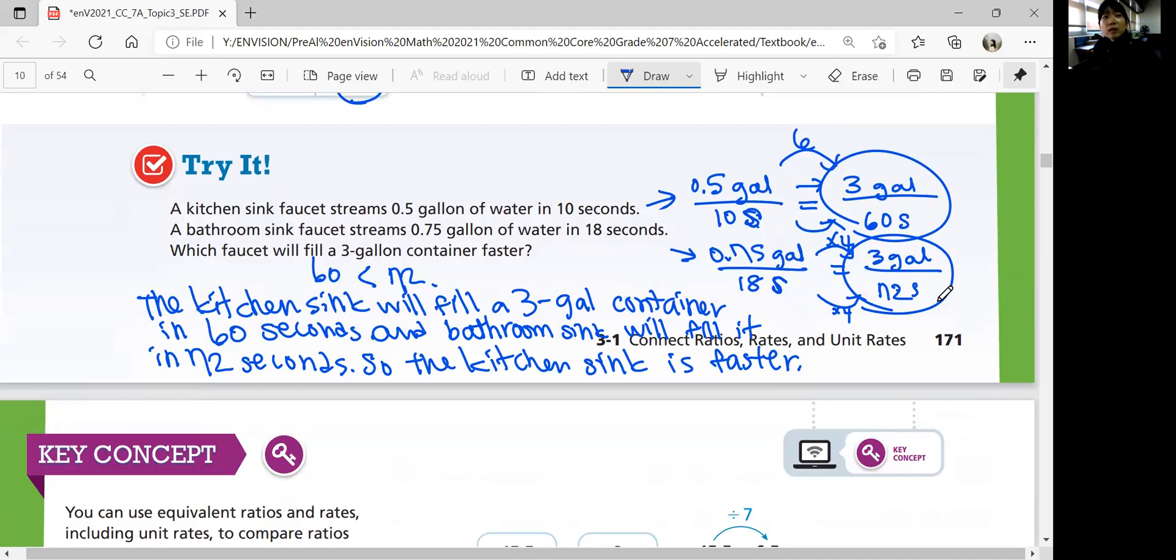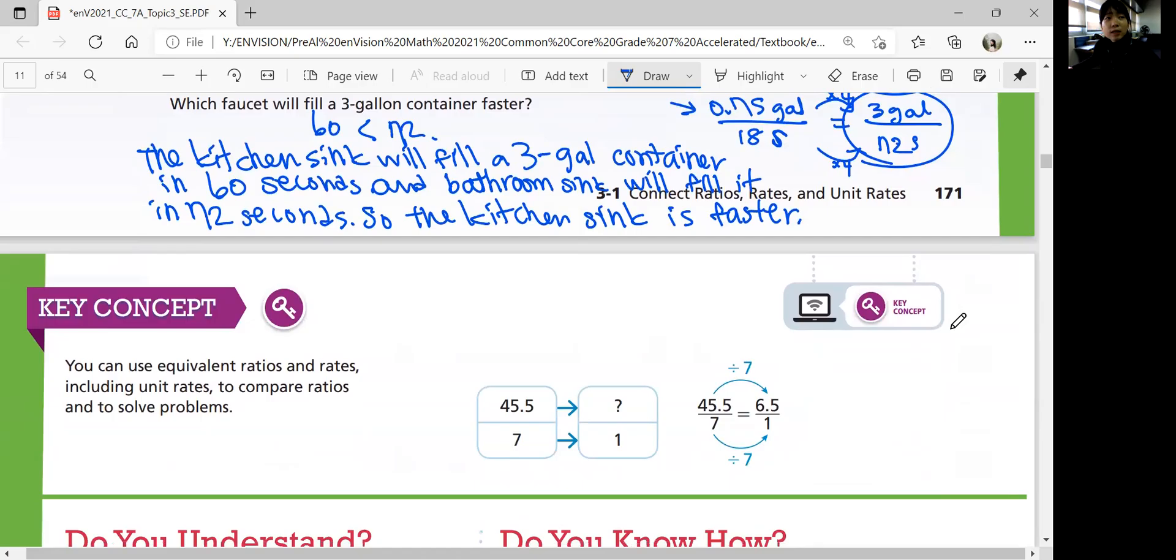That was our first lesson of topic three. Let's summarize our lesson. In this lesson, we learned how to use equivalent ratios and rates, including unit rates, to compare ratios and solve problems. Make sure how to write unit rates and compare them. That was lesson one. We'll continue with the next lesson in the next video. Bye!